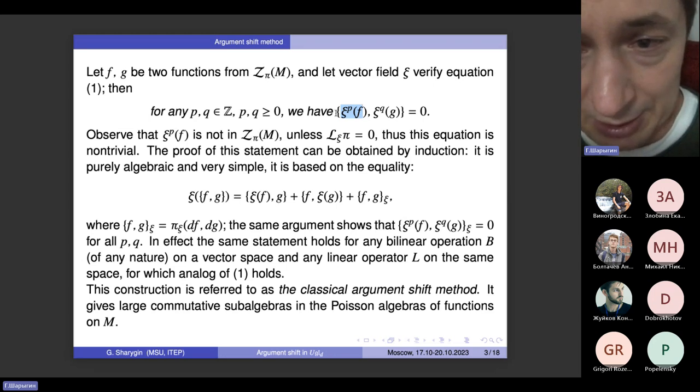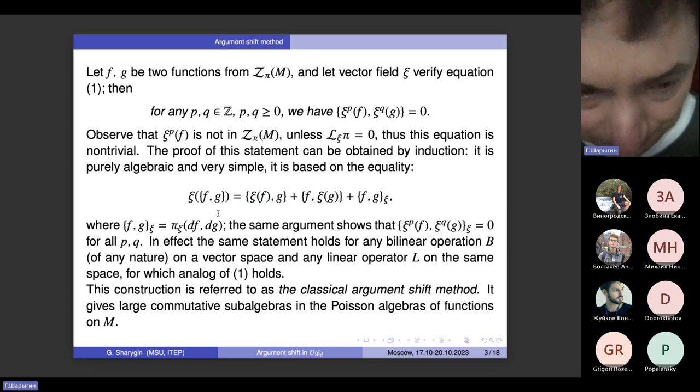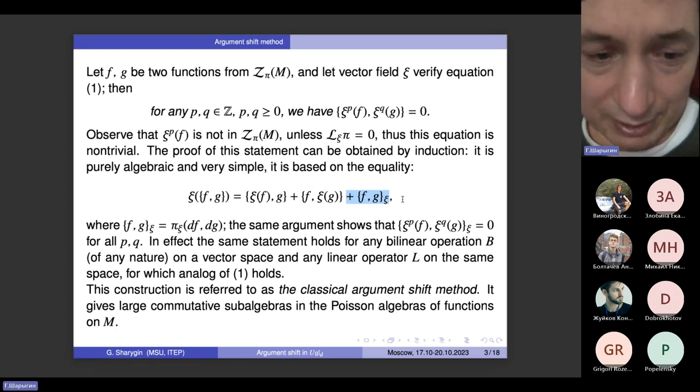It is interesting that this result, this equation, this formula can be proved very easily and very straightforwardly by simple induction on p and q. It begins with just this equation that when you have vector field psi acting on a Poisson bracket of two functions, it is equal to this combination of expressions. And this applies to any pi vector, actually to pi sub psi as well.